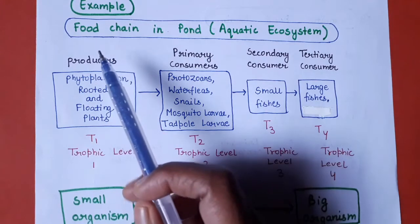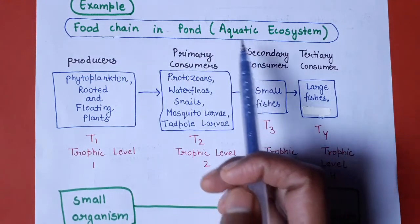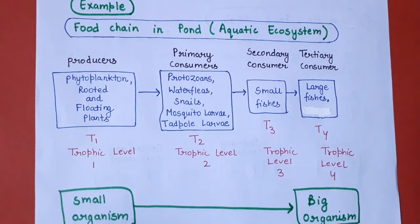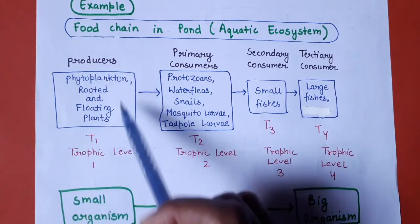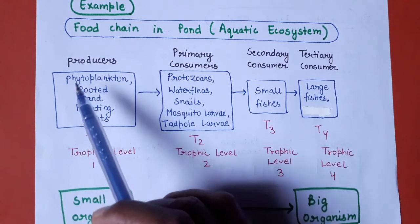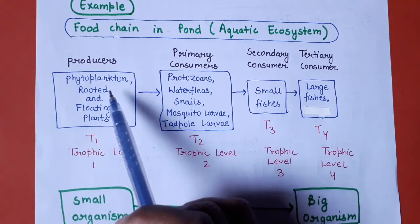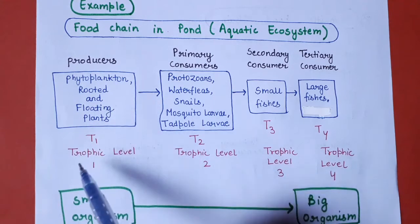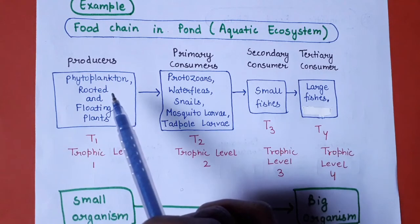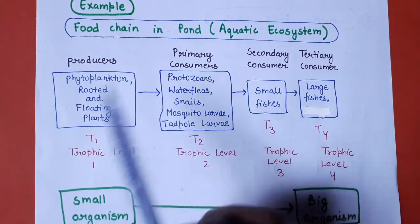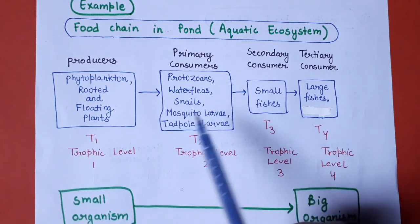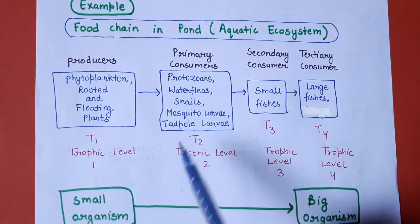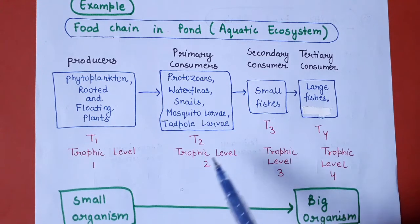Grazing food chain ke examples mein pehla example hai food chain in pond — an aquatic ecosystem example. Grazing food chain start hogi photosynthetic plants yani primary producers se. Pond mein bahut saare phytoplankton present hain; iske alawa rooted aur floating plants bhi producers ki category mein aate hain — trophic level 1. Iske baad phytoplankton aur chhote plants par feed karengi primary consumers: protozoans, water fleas, snails, mosquito larvae, tadpole larvae — ye trophic level 2 mein aate hain.